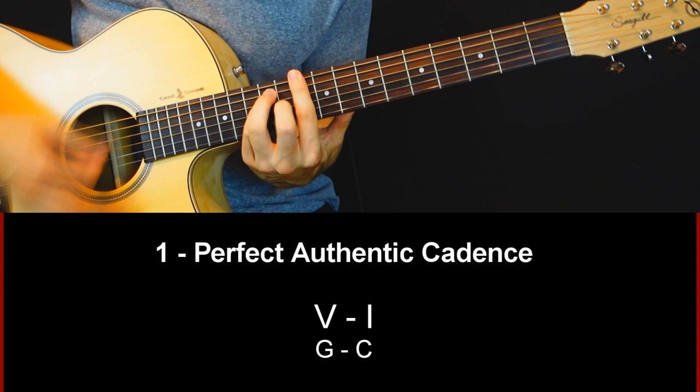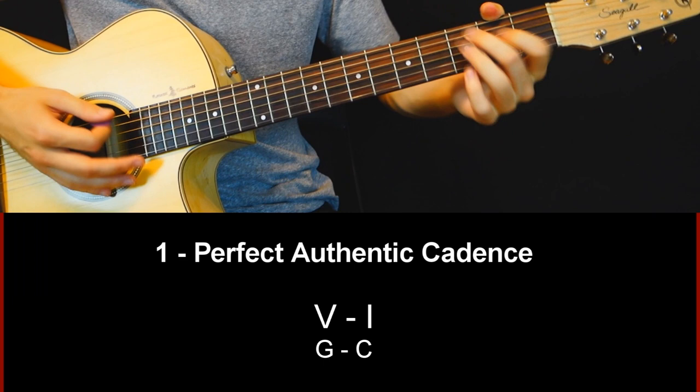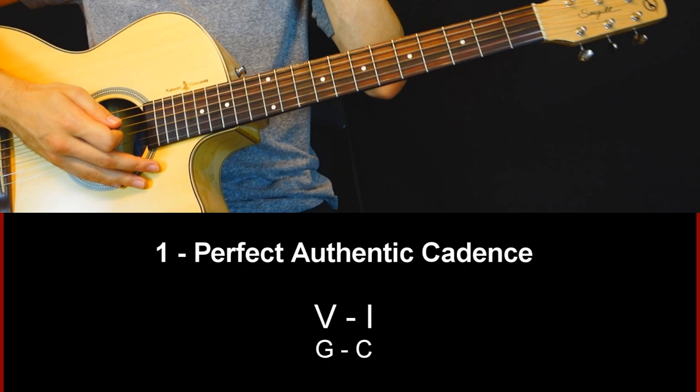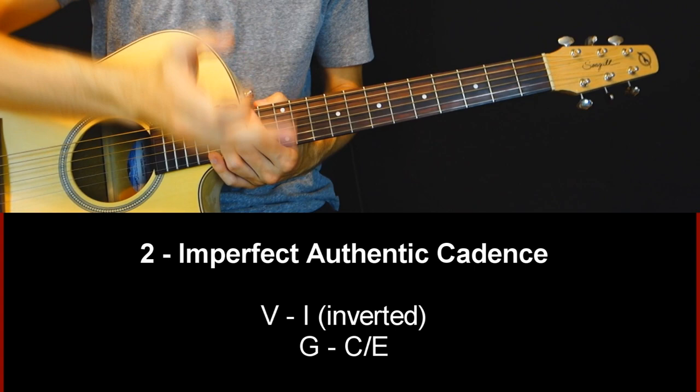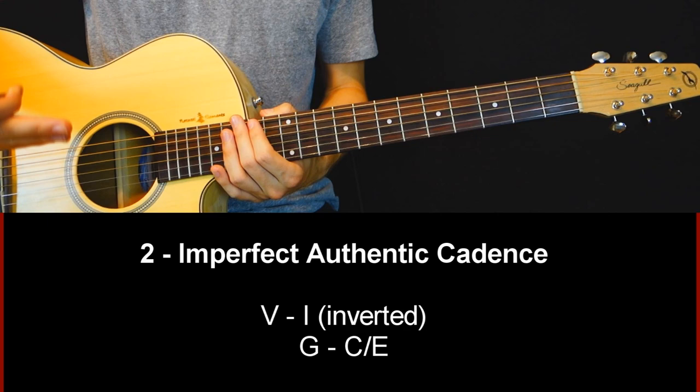This is the most basic cadence, but you can also have an imperfect authentic cadence. It means it's still going to be the fifth degree resolving to the first — the fifth to the root chord — but the root chord is going to be in an inverted version, so it doesn't sound as conclusive as the perfect authentic.